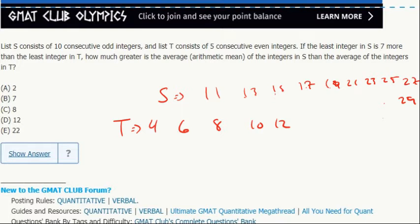So the average of S is how much greater than the average of T. The average of S, there's an even number of values in the set, there's 10 values in the set, the average is going to be the median of the middle two.